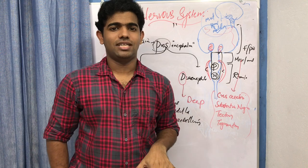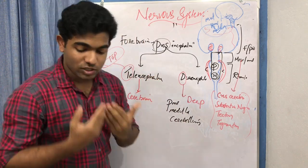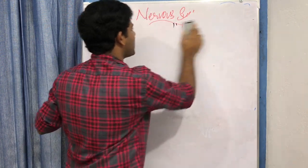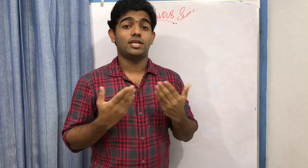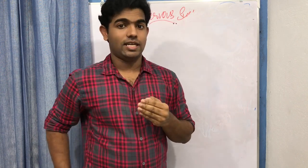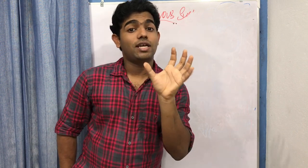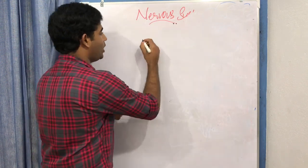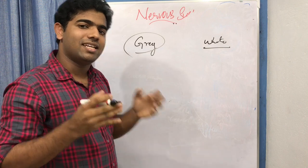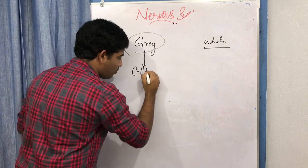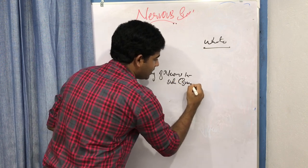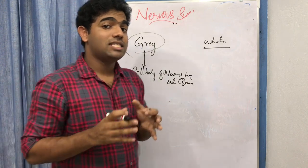Some basic foundational knowledge: the nervous system is made up of neurons. Neurons are the building blocks and functional components of the nervous system. There are also supporting cells called neuroglial cells. We will discover neurons in detail later. Two more important concepts are gray matter and white matter.